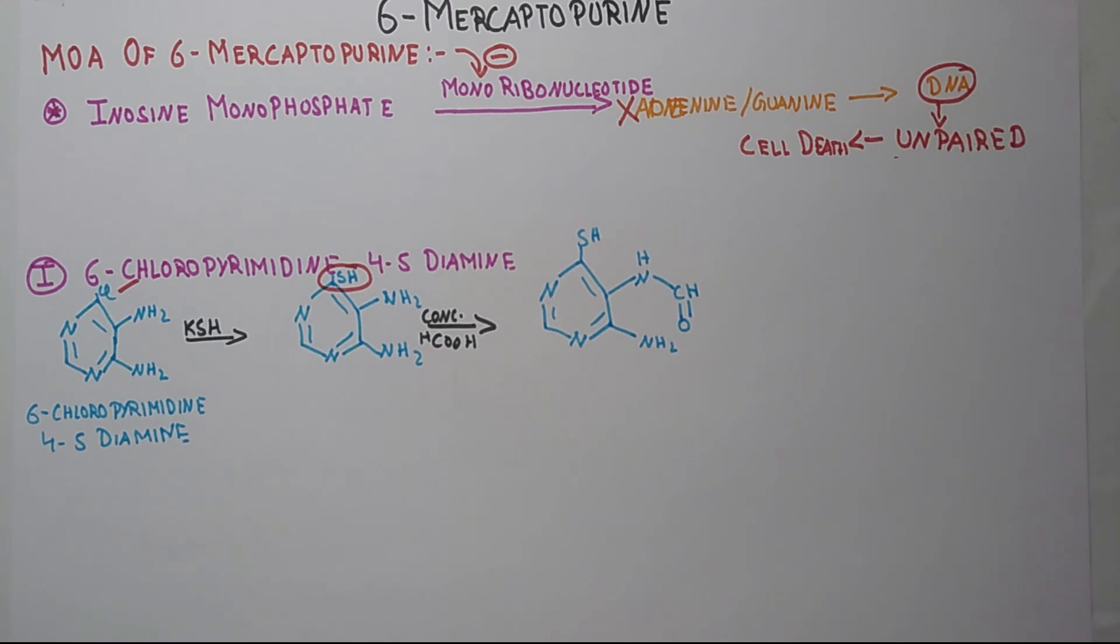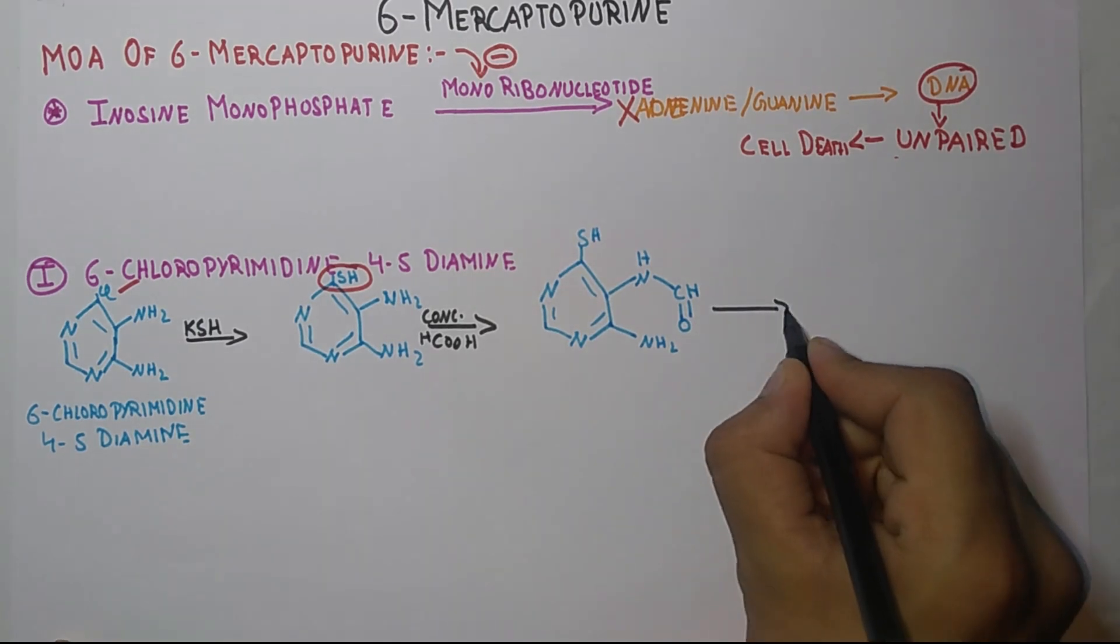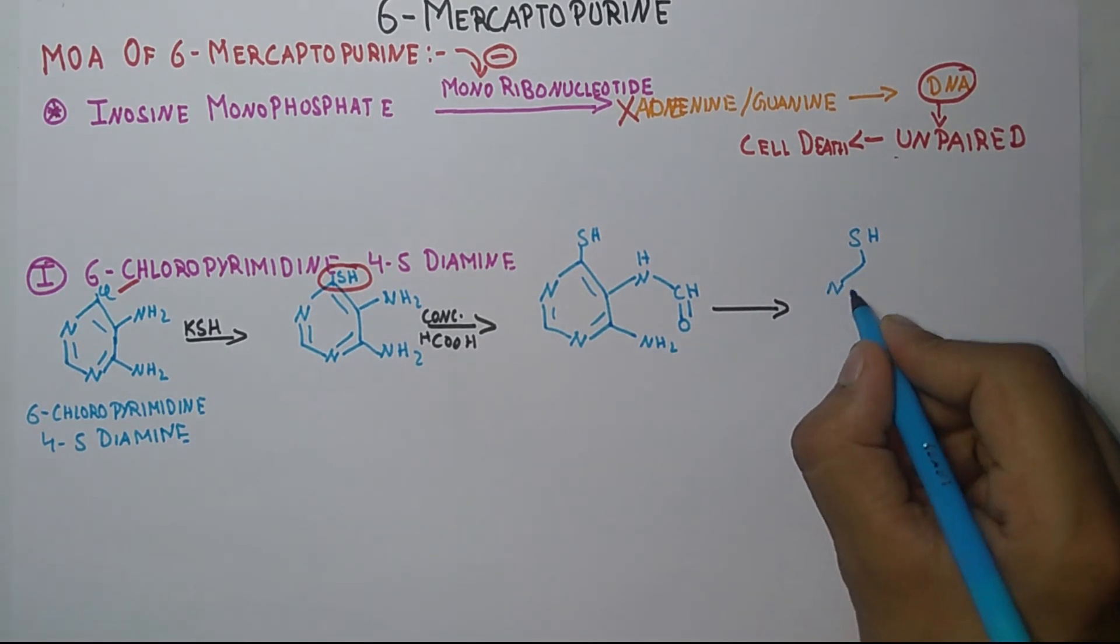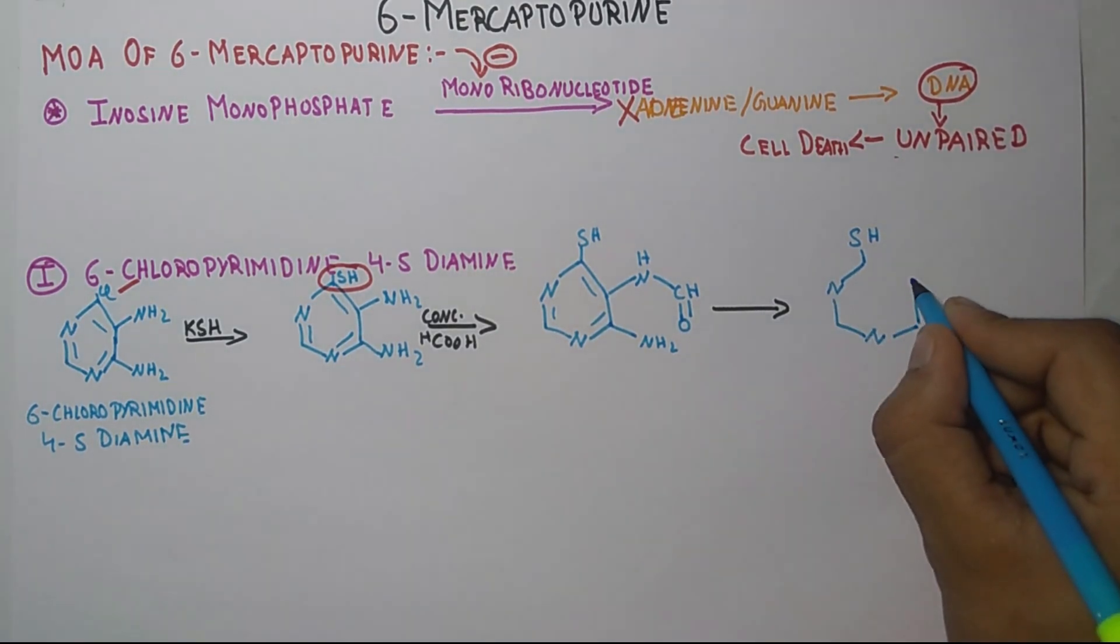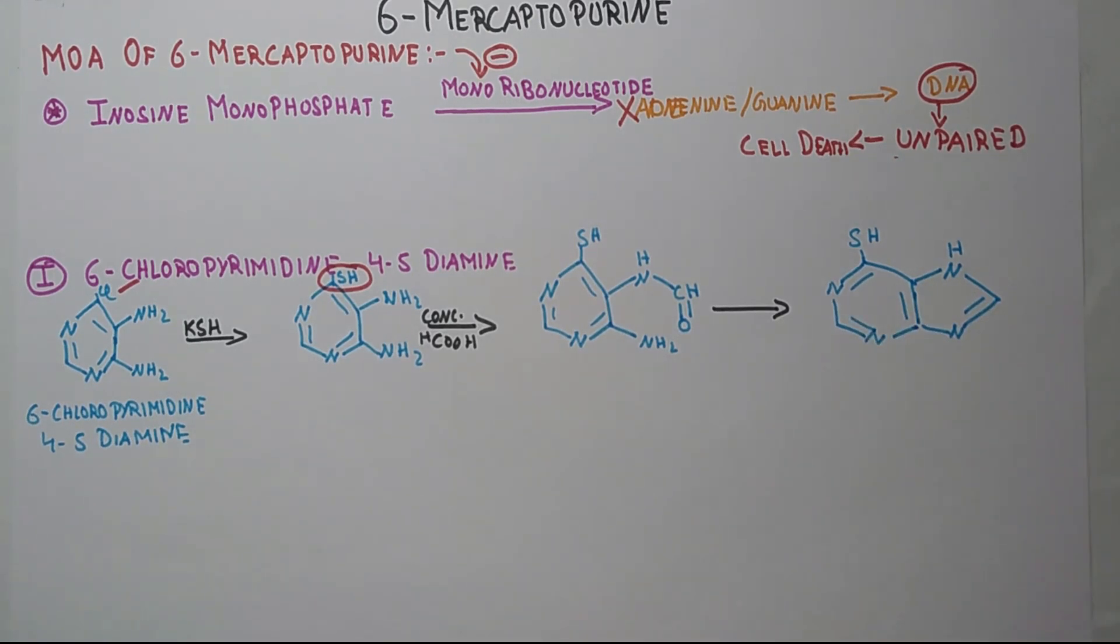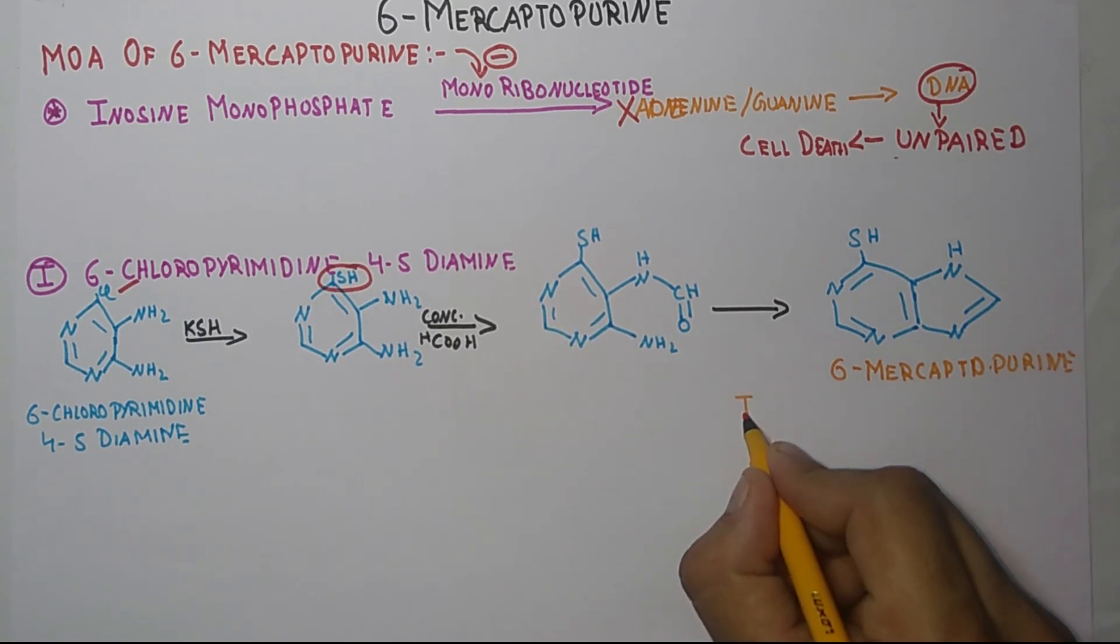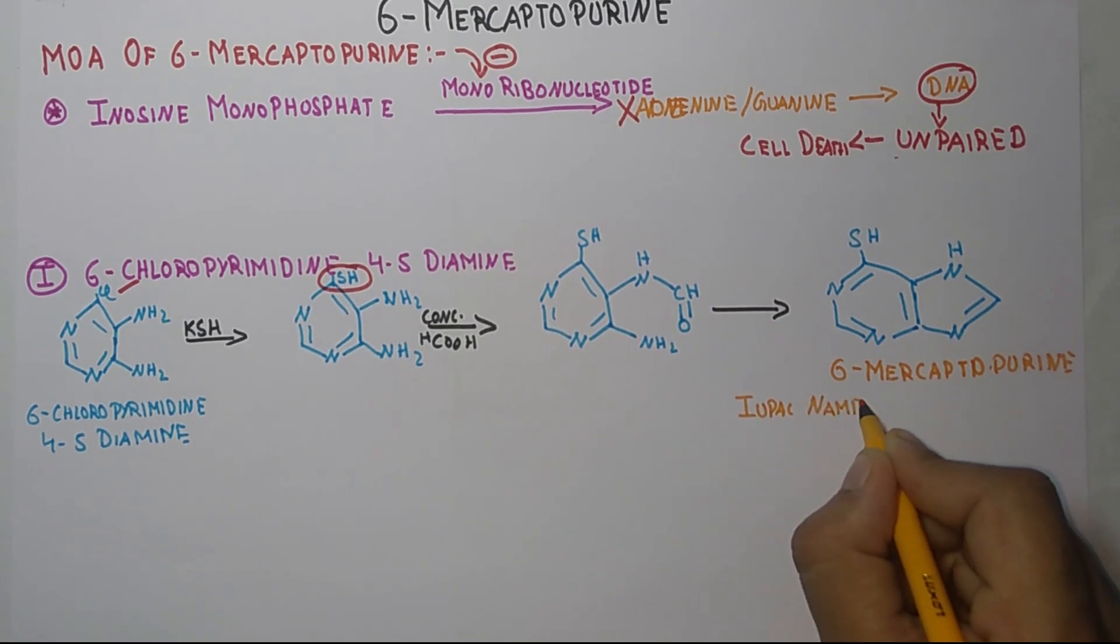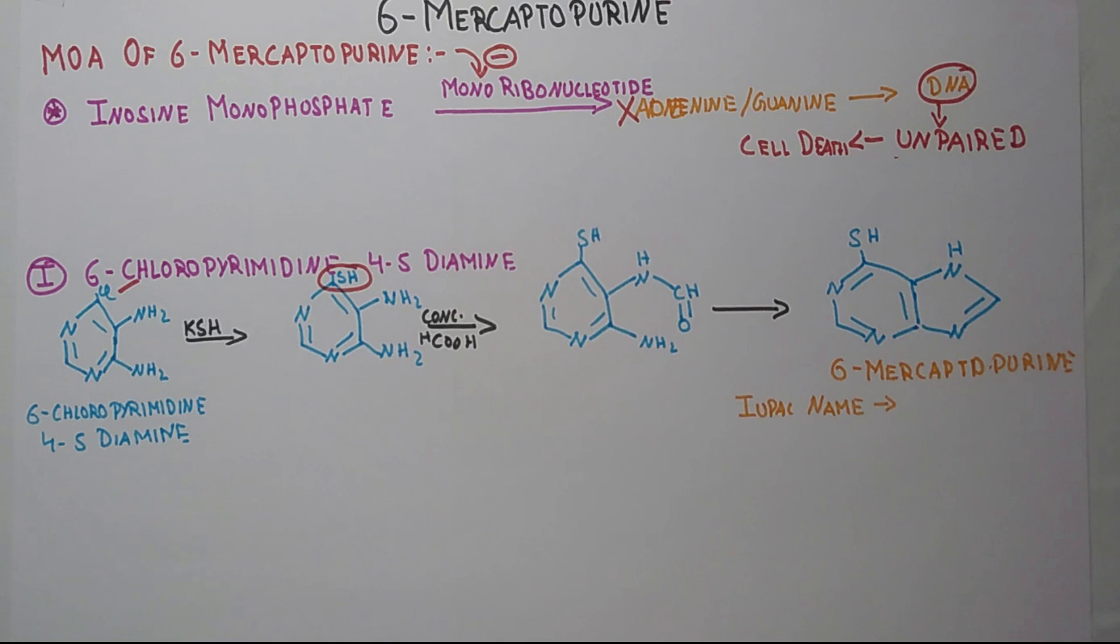Now at last, the final product will be the formation of 6-mercaptopurine. So this is the structure of your 6-mercaptopurine, and its IUPAC name is purine-6-thiol.